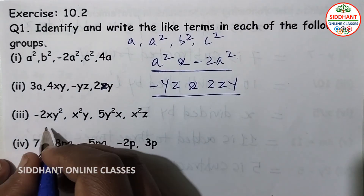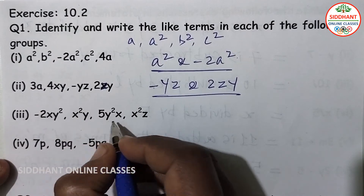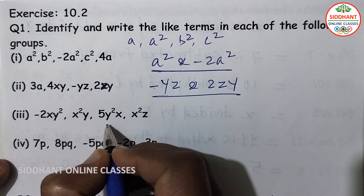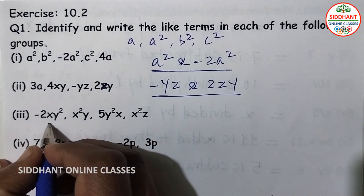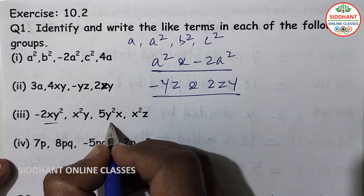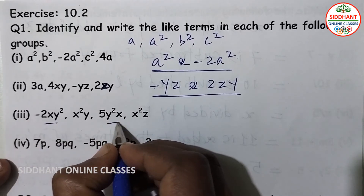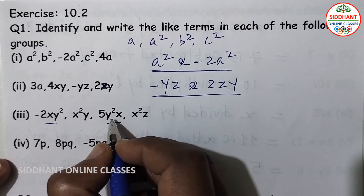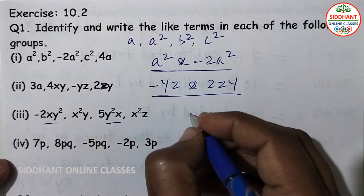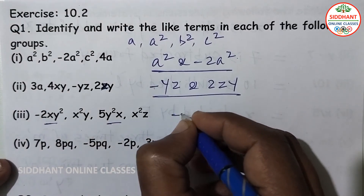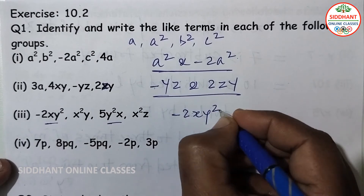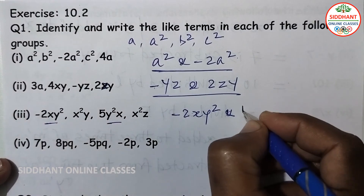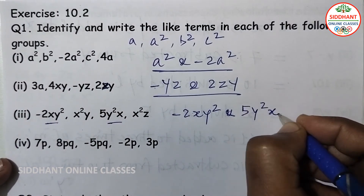Third group: minus 2xy square, x square y, 5y square x, and x square z. The like terms here are minus 2xy square and 5y square x, since xy square and y square x are the same expression.